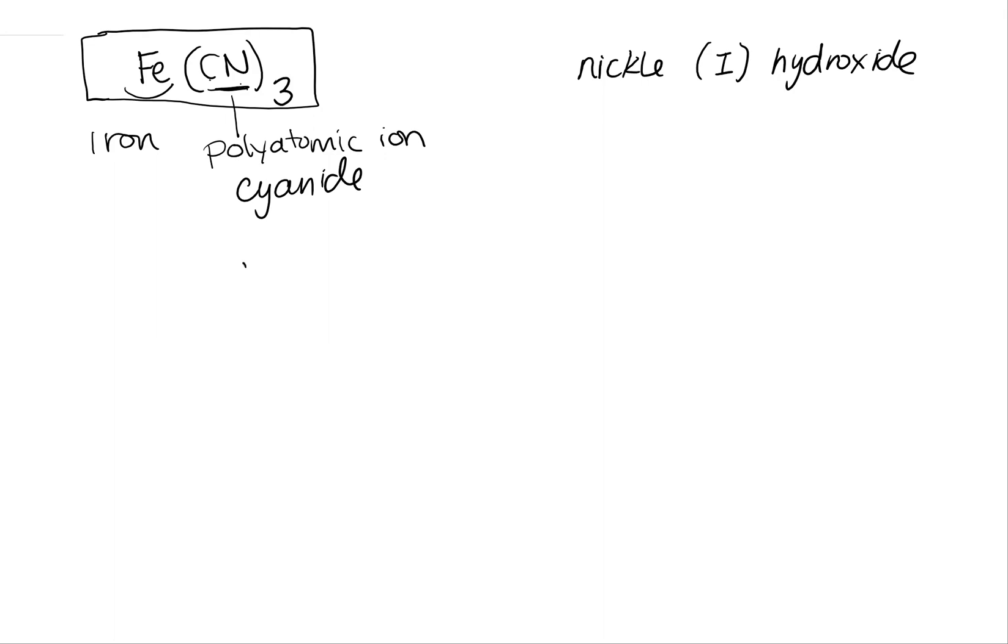So each of my cyanide anions have a negative one charge. And I determined that by looking at my polyatomic ion chart. So then if I had one of these, I would have a plus one iron. My iron has to be positive. It's the cation.